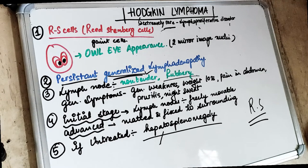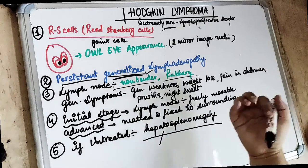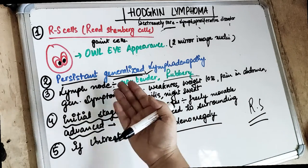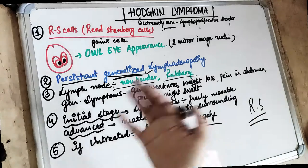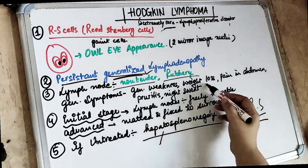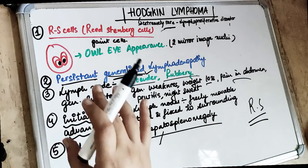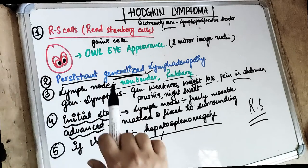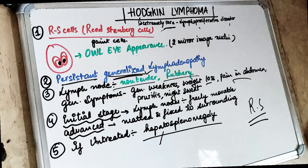We also see some general symptoms. There will be generalized weakness due to persistent generalized lymphadenopathy. In case of Hodgkin lymphoma we see generalized symptoms including weight loss, pain in abdomen, pruritus — a skin condition wherein the patient feels like itching all the time — and night sweats.